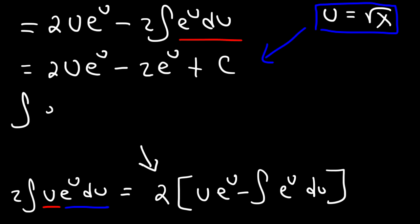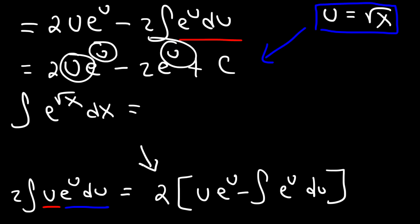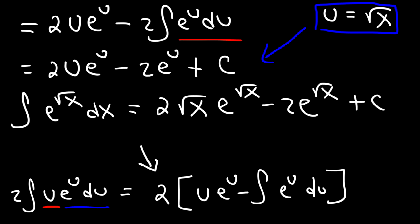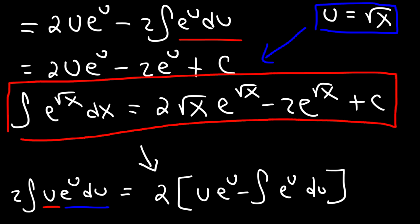The integral of e to the square root of x dx — everywhere you see a u variable, replace it with the square root of x. So this is going to be 2 square root x times e to the square root x, minus 2 e to the square root x, plus c. And that is the final answer. So that's how you can find the integral of e to the square root of x dx.